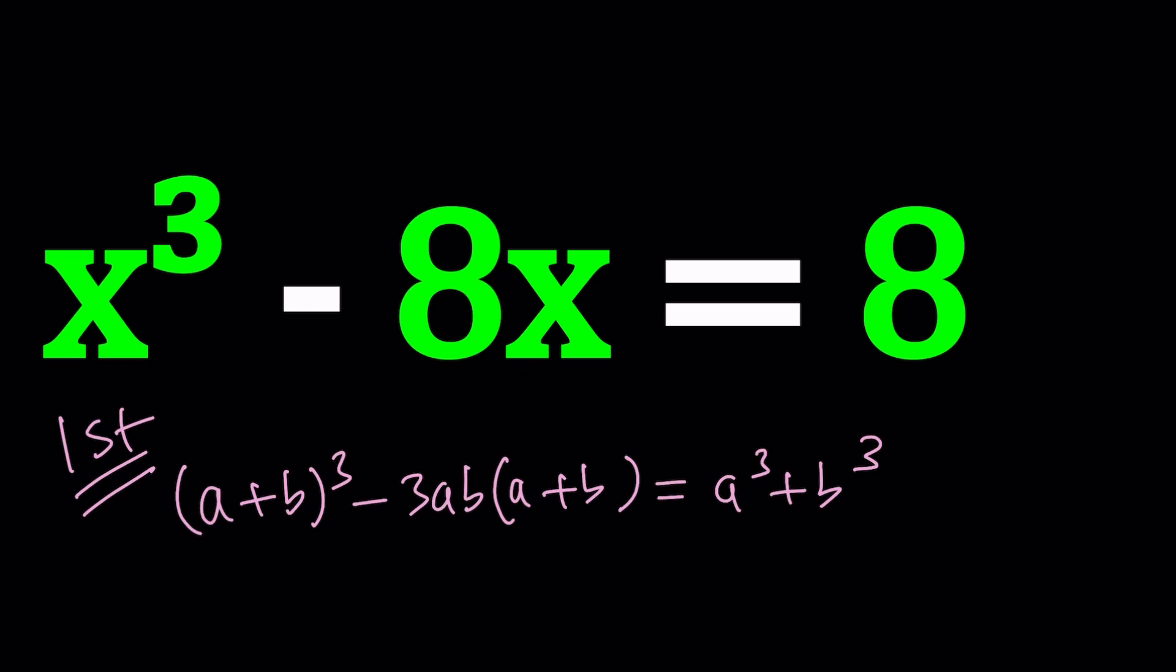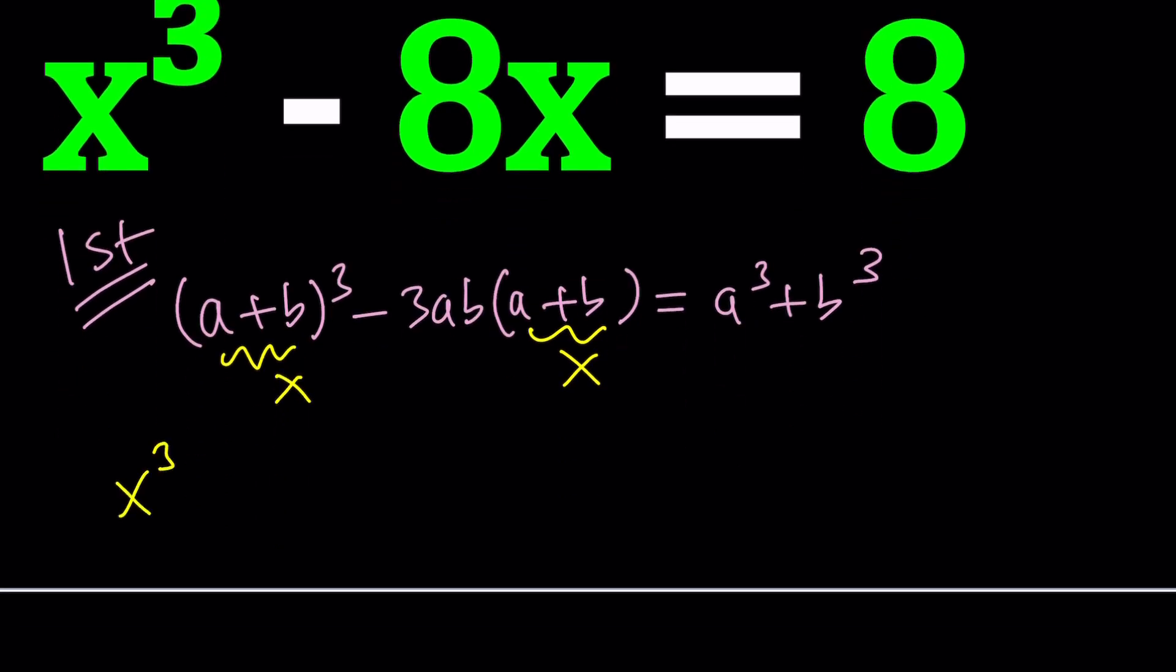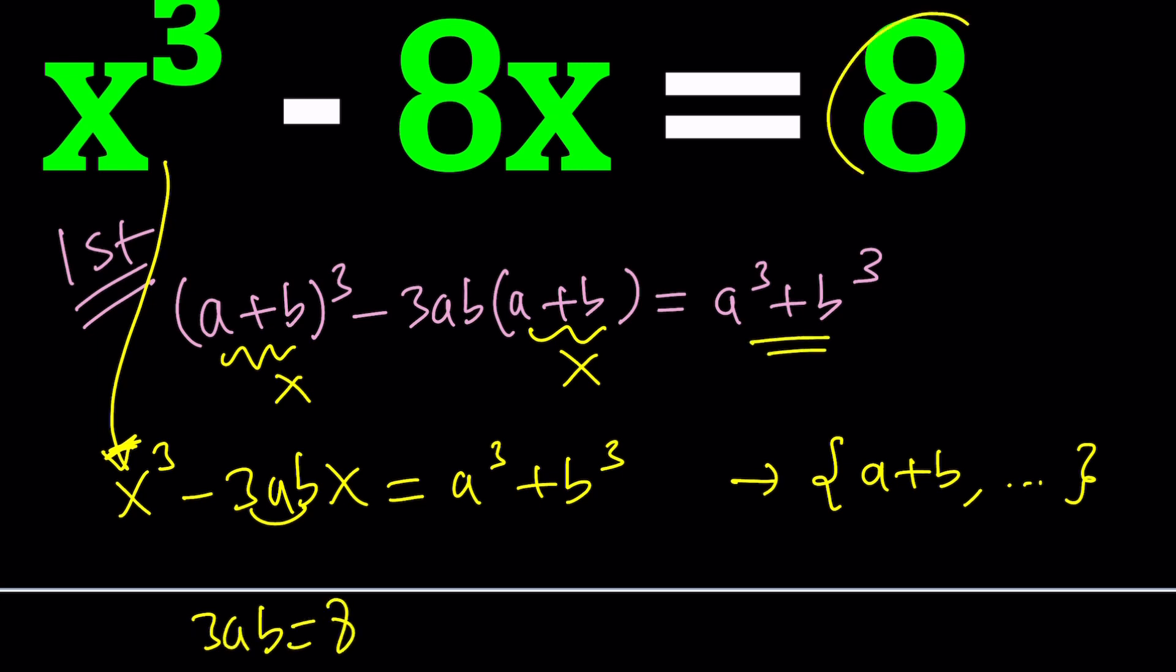What do I mean by a depressed cubic? There's no x² in the equation. So let's go ahead and set a + b equal to x and then our equation becomes x³ - 3abx = a³ + b³. Since x = a + b is a solution we can make our equation look like this. Compare these two equations which means 3ab = 8 and a³ + b³ = 8. From here we get a system of equations.